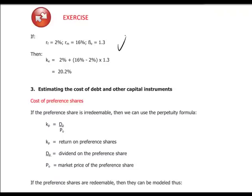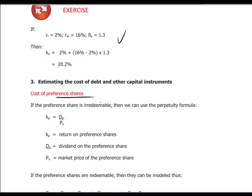We said higher risk requires higher return to the investor. When we look at other capital instruments, we can determine, based on observation of market prices, the corresponding cost. Let's take preference shares. If the shares are irredeemable, we can use a perpetuity formula. If we know the dividend payable on the preference share, we divide it by the market price and extract our percentage required return on preference shares.